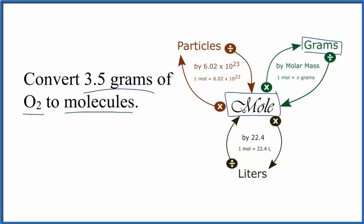Once we have that, then we can get to particles, which are molecules, atoms, or ions. So we need to get the grams to moles, and we can do that by dividing by the molar mass of O2. We get that from the periodic table.